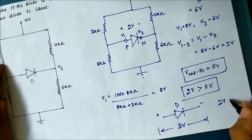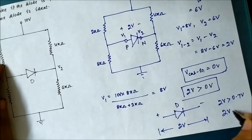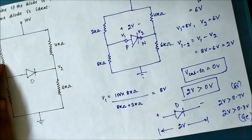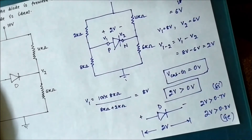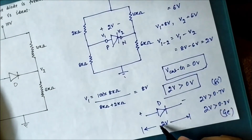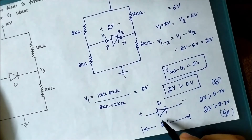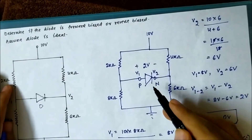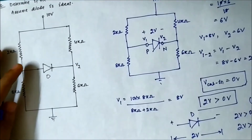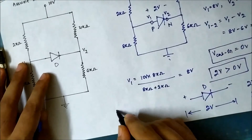Two volts is greater than 0.7 volts for silicon and greater than 0.3 volts for germanium. So even if it were a simplified diode model with cutting voltages of 0.7 volt or 0.3 volt, the diode would have been forward biased because the voltage we calculated was two volts. Therefore, the diode in this circuit is forward biased — the diode is on.